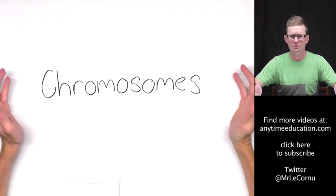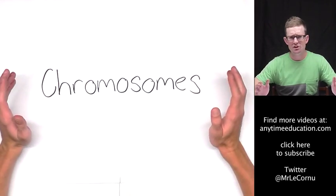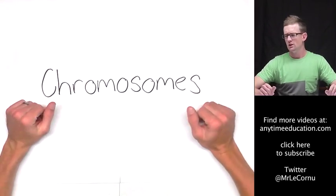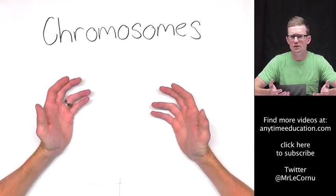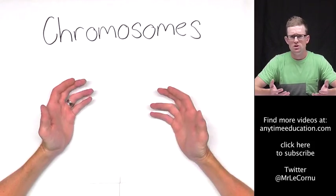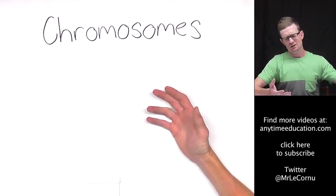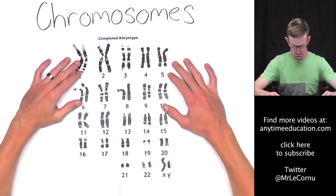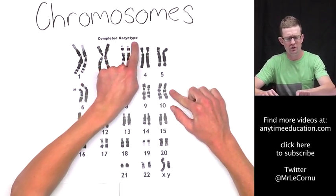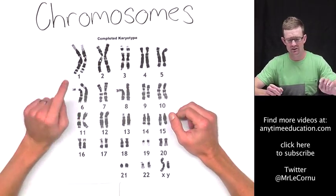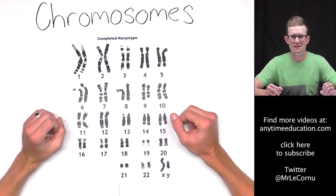So what are chromosomes? You've probably heard of them before. For example, you might have heard that humans have 46 chromosomes, and that chromosomes have something to do with DNA. This is the human karyotype — a picture of all of the chromosomes from within a cell of a particular species.